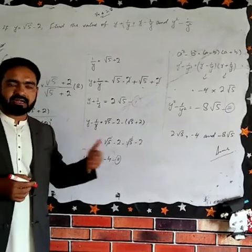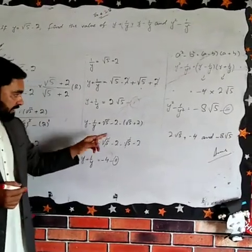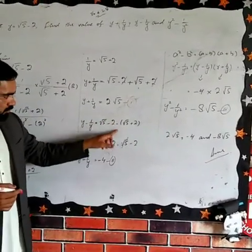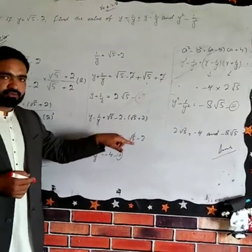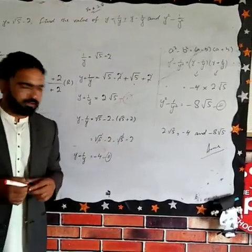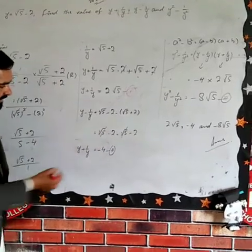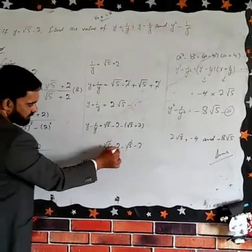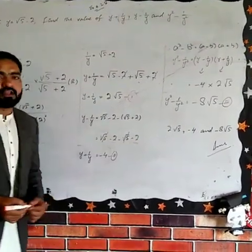√5 - 2 - (√5 + 2). Like terms: √5 - √5 cancel. So we add -2 and -2, which equals -4.